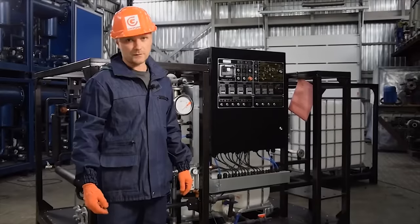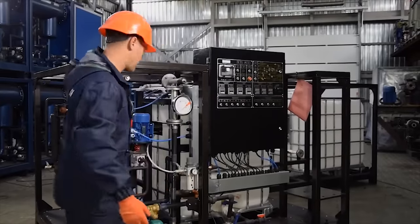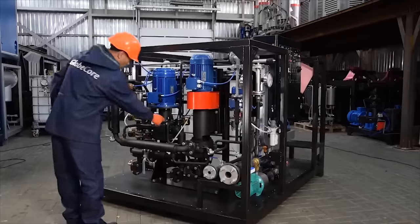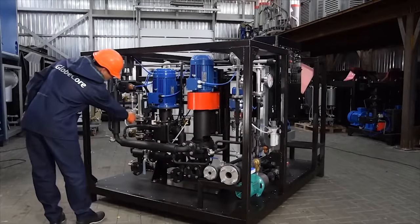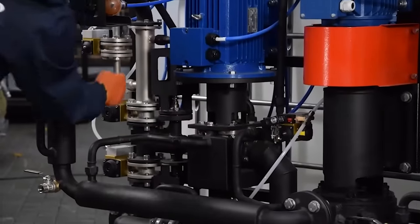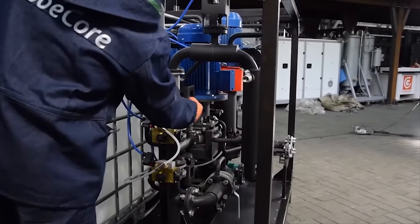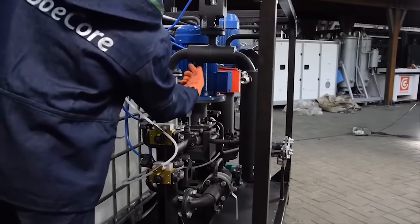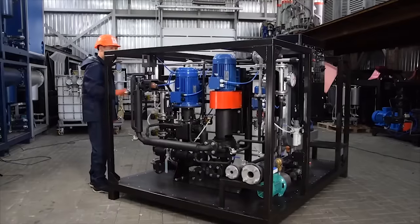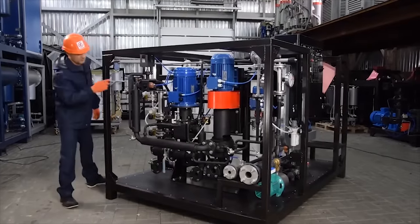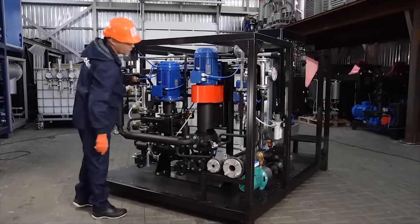Then we go to the second stage, the emulsion production proper. The bitumen pump directs bitumen into another hydrodynamic mixer. Water phase is pumped into the same mixer, and this is where the emulsion is created and sent to a colloid mill for final homogenization.